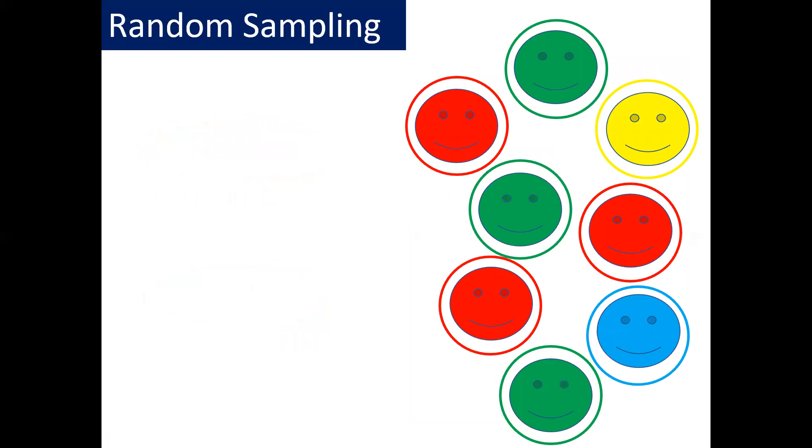Let's begin with random sampling. The key thing about random sampling is that everybody has an equal opportunity of being picked. Now with random sampling, you don't simply choose somebody at random. So for example, my favorite color is red, therefore I'm more likely to pick the red person on here. What we use is a random number generator. And this will give you a number. So it may give you the number four, for example. So you would count one, two, three, four, and that would be the piece of data that you pick. Here we've got eight different pieces of data. We've got three red faces, three green faces, one yellow face, and one blue face.